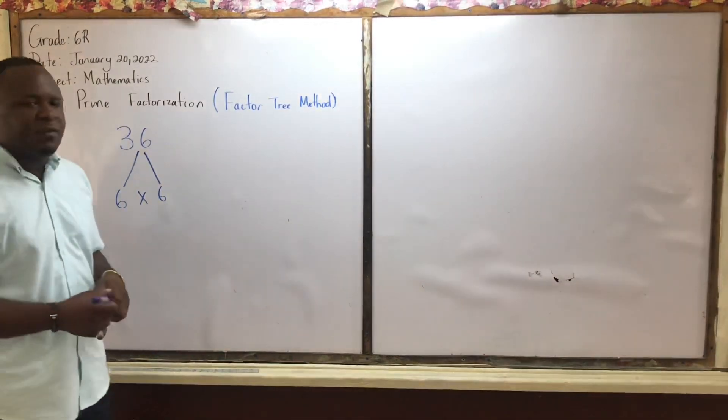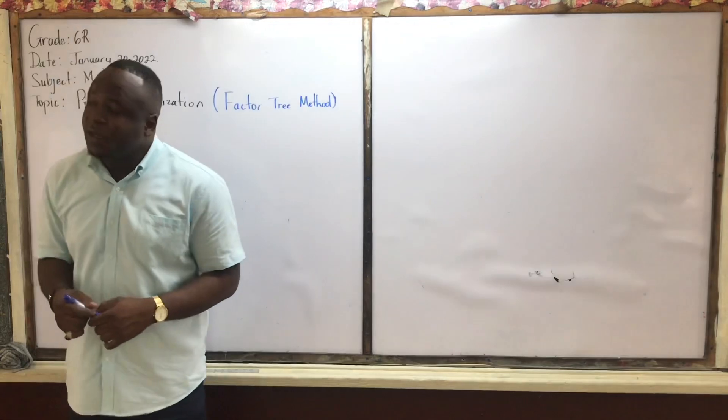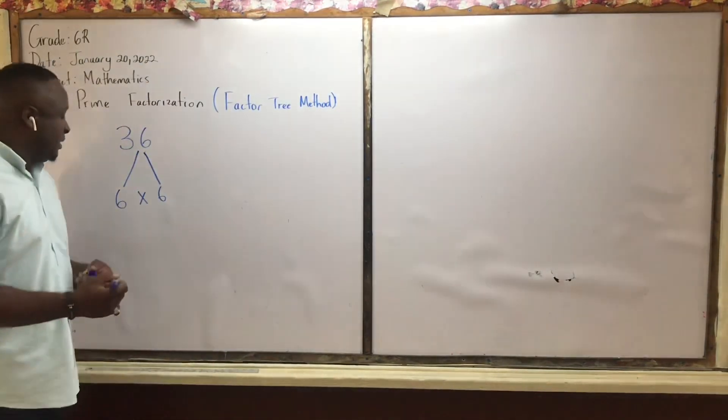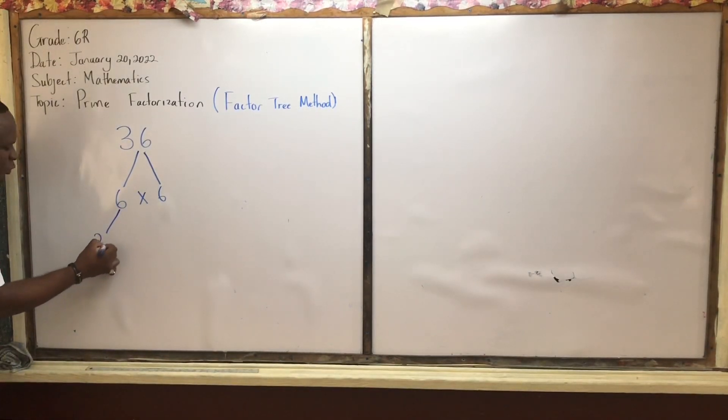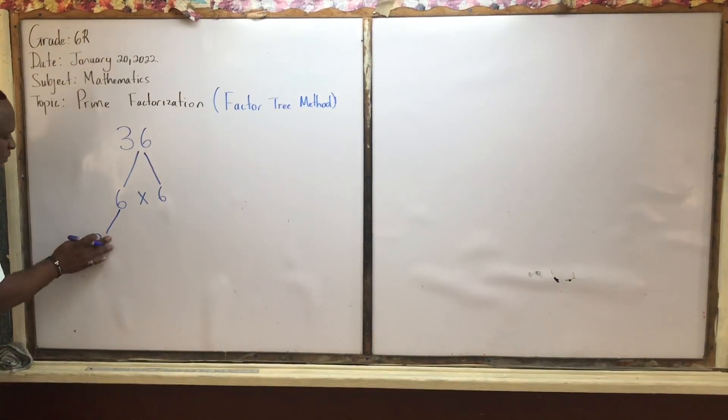What two numbers multiply to give us 6? Yes. Repeat. 3 times 2 or 2 times 3. So 6, to get 6, we multiply 2 times 3.